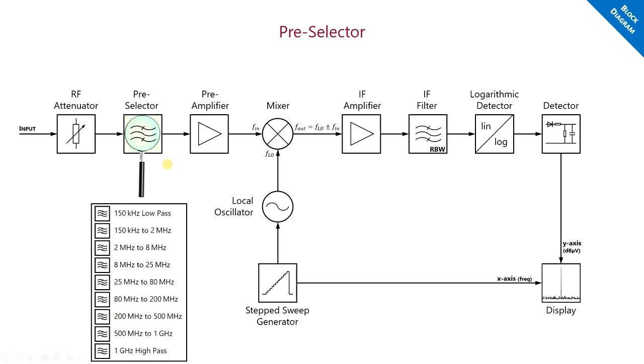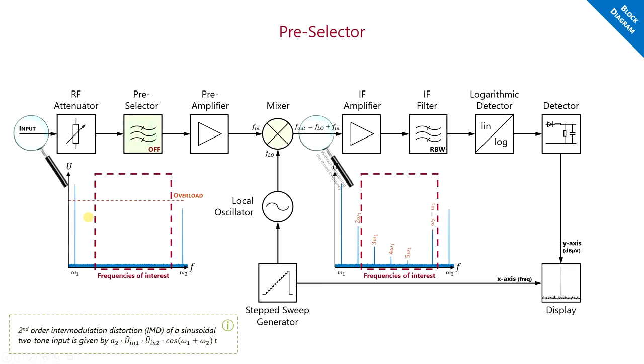The attenuator is followed by a preselector. This is some kind of switchable filter bank where an appropriate filter is chosen automatically. We need this preselector for two reasons. First is once again to prevent overload conditions from signals outside of our range of interest. The second is to prevent spurious mixing products or intermodulation distortion products.